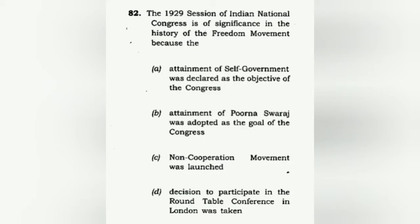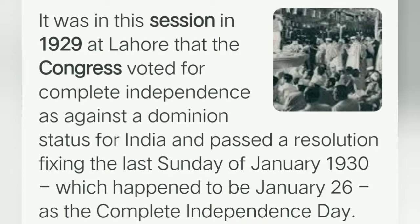The 1929 session of the Indian National Congress is of significance because this was the Lahore session. In this session, the attainment of Purna Swaraj was adopted as the goal of the Congress. Make sure you know all the important Congress sessions — the Wardha session and others — so that if a question like this appears, you can clearly write your answer. This session happened to result in January 26 being celebrated as Independence Day pledge day.